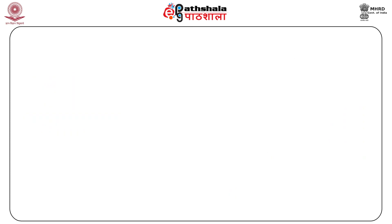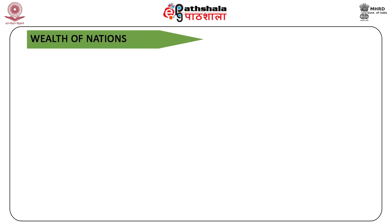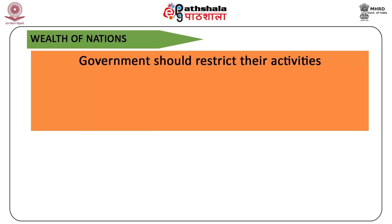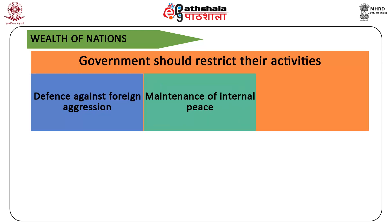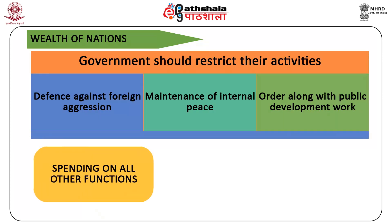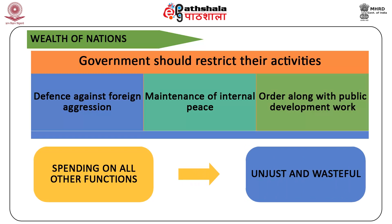According to Adam Smith in The Wealth of Nations, the government should restrict their activities to defense against foreign aggression, maintenance of internal peace and order, along with public development work. All other functions besides these were to be considered beyond the scope of the state, and expenditure on them would be treated as unjust and wasteful. However, over the years, there has been a growing expansion in the functions of government, which has resulted in phenomenal increase in public expenditure.